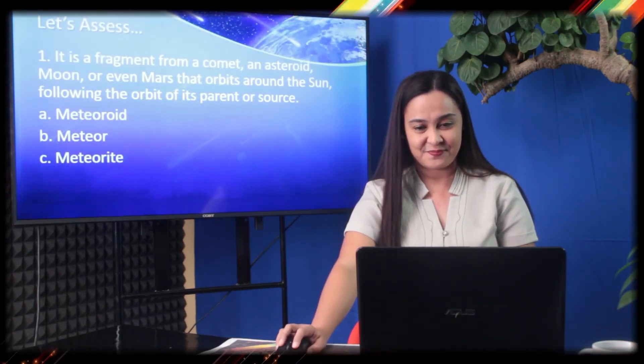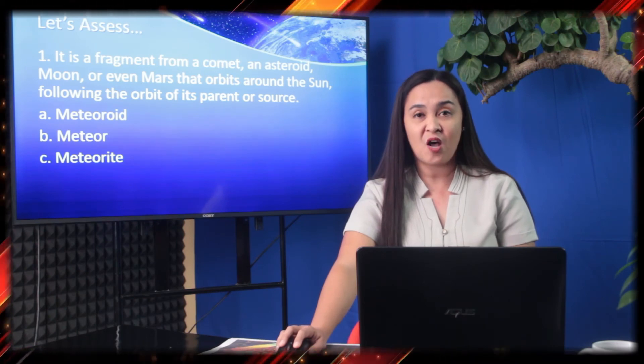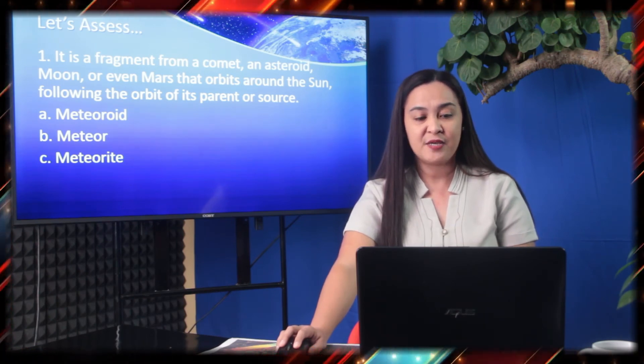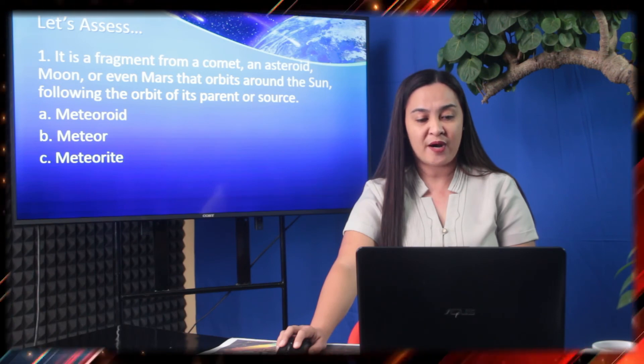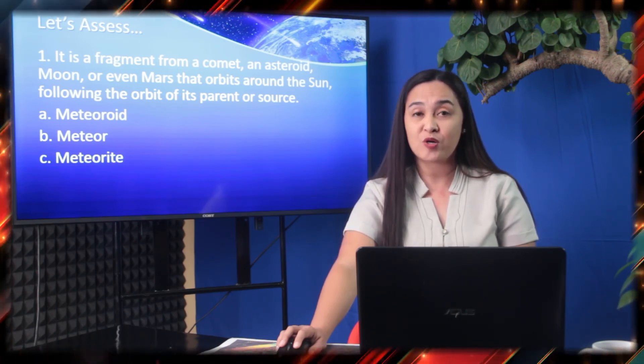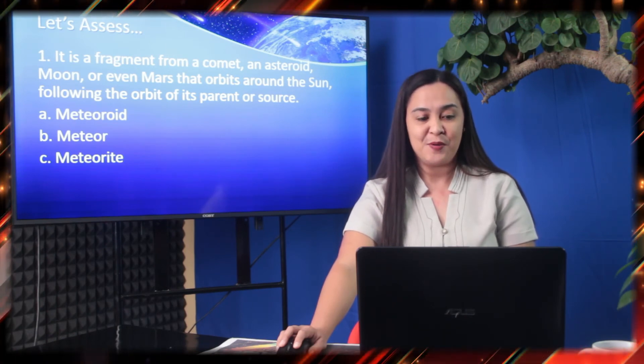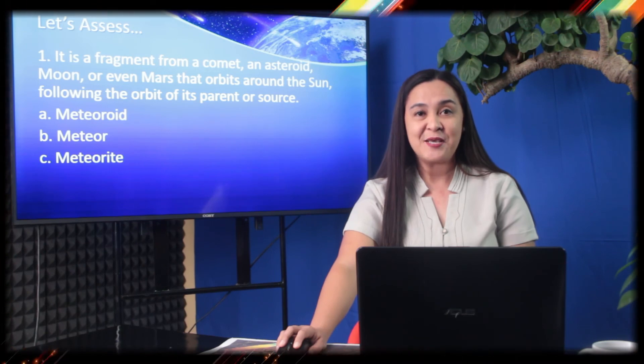Are you still with me, students? Let's assess your learning today by answering the following questions. You may write it on a piece of paper. Number 1: It is a fragment from a comet, an asteroid, moon, or even Mars that orbits around the sun, following the orbit of its parent or source. A. Meteoroid, B. Meteor, or C. Meteorite.